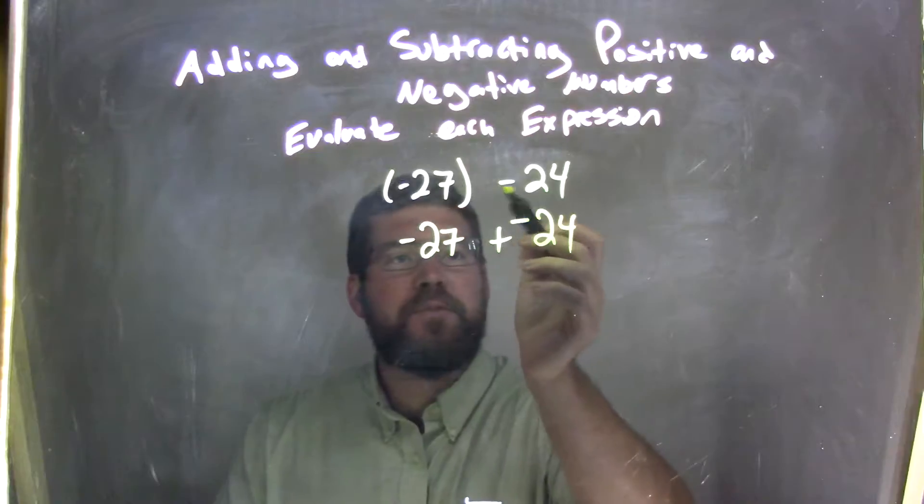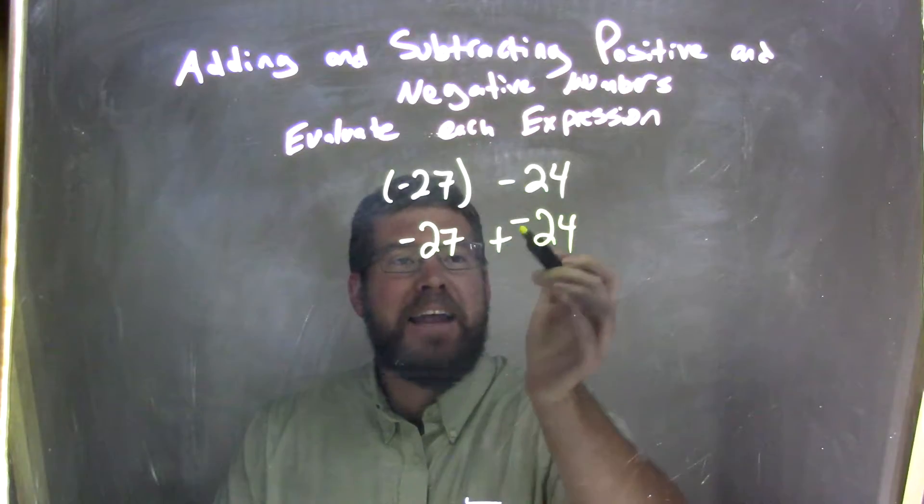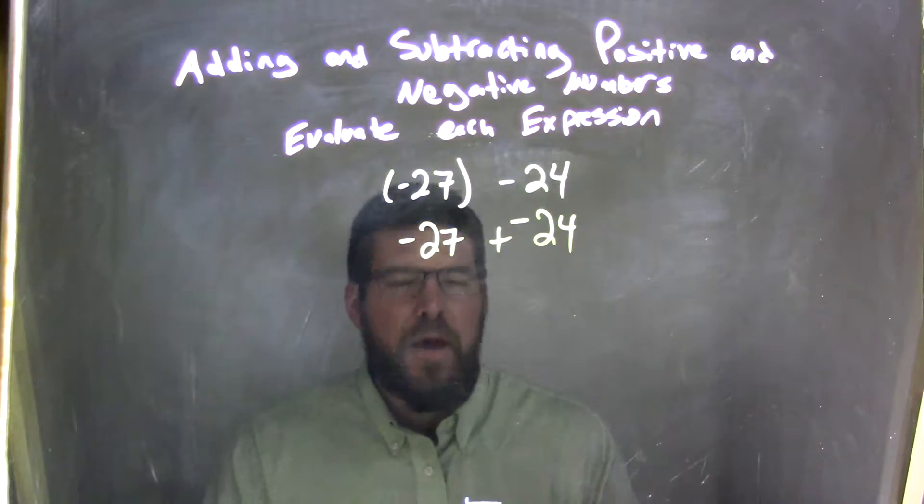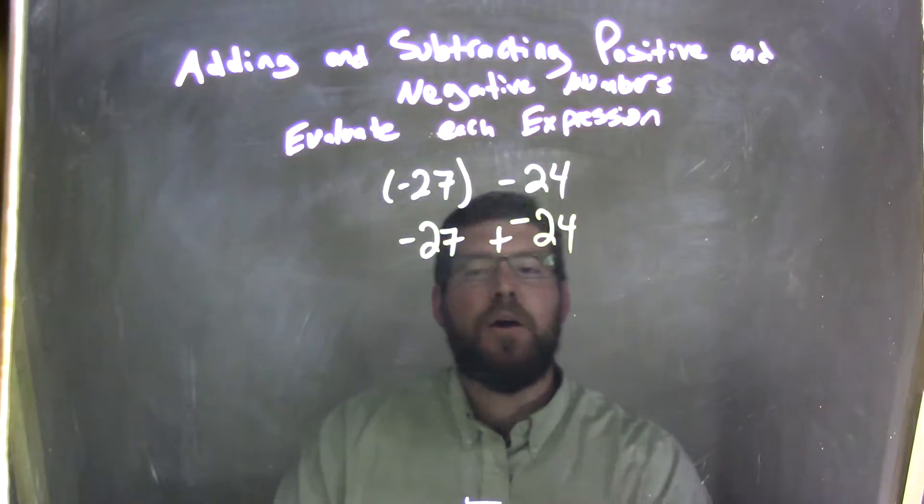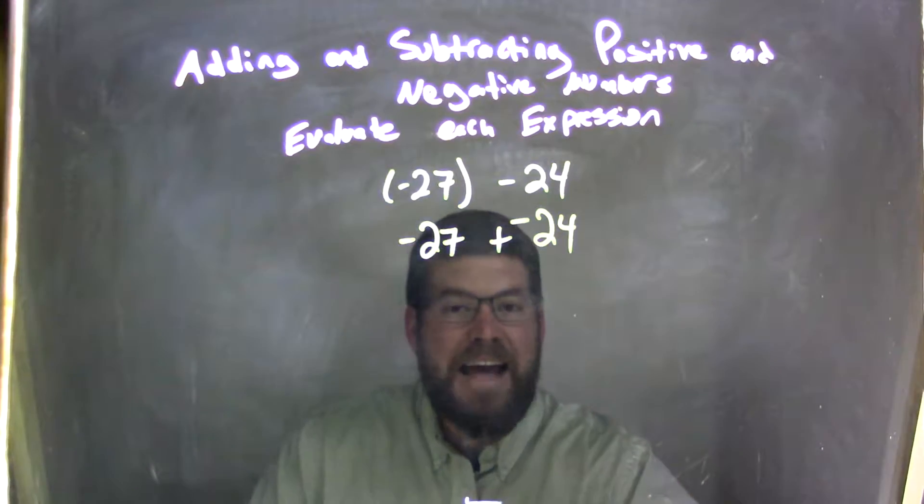Now notice that we have subtraction turning into adding a negative, same thing. And the reason why I did that is because my first number was already negative, so now I have two negative numbers I need to add together.